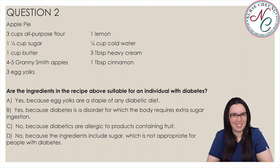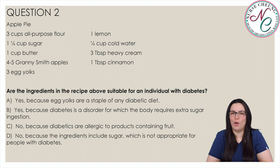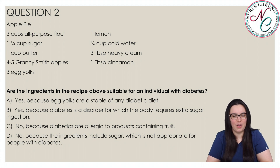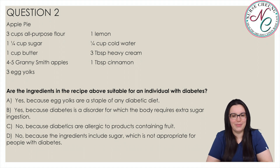Question two: apple pie. Three cups all-purpose flour, one and one-fourth cup sugar, one cup butter, four to five Granny Smith apples, three egg yolks, one lemon, a fourth of a cup cold water, three tablespoons of heavy cream, and one tablespoon of cinnamon.